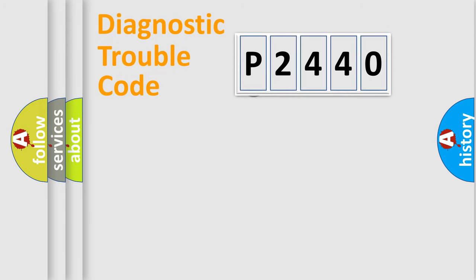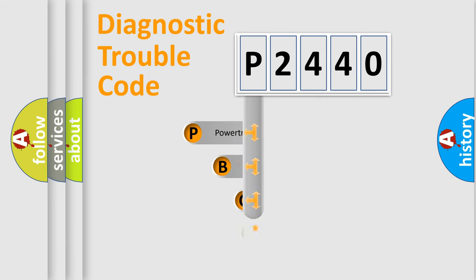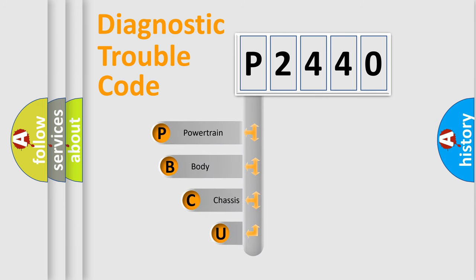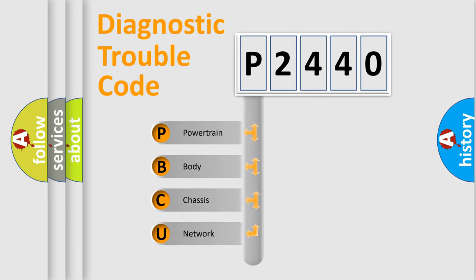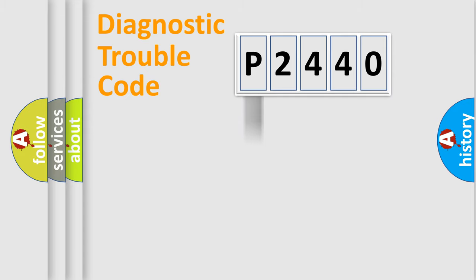First, let's look at the history of diagnostic fault code composition according to the OBD2 protocol, which is unified for all automakers since 2000. We divide the electric system of the automobile into four basic units: Powertrain, Body, Chassis, and Network. This distribution is defined in the first character of the code.